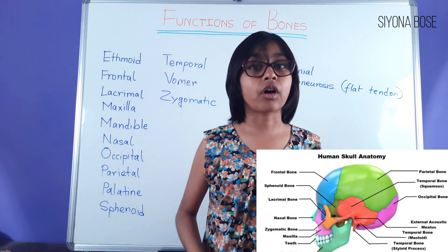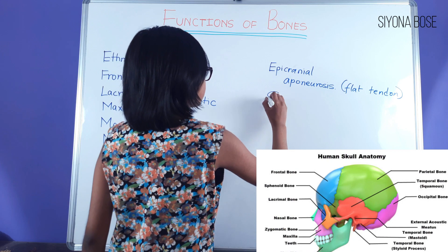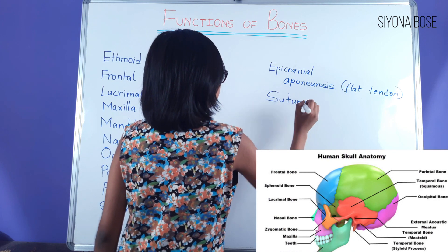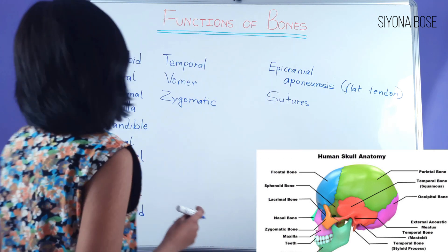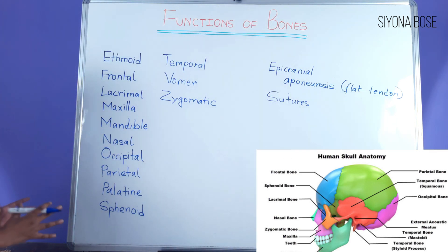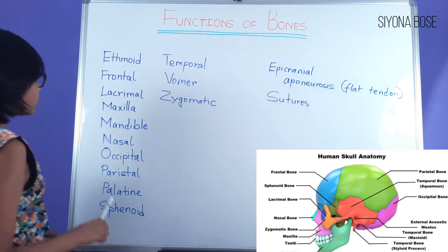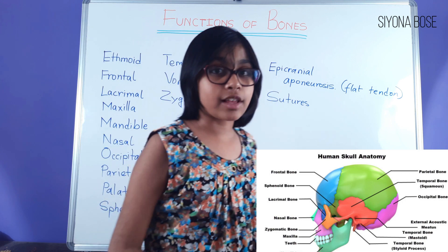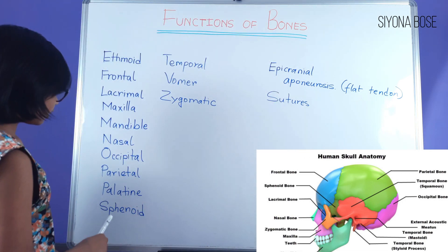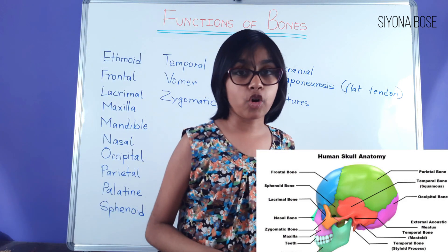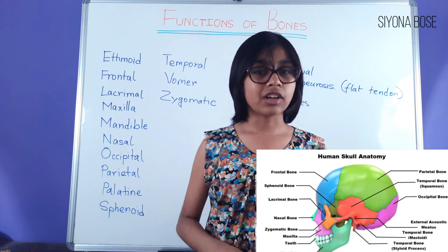The bones of the cranium are attached by sutures. Revising the bones of the face and cranium — the whole skull: ethmoid, frontal, lacrimal, maxilla, mandible, nasal, occipital, parietal, palatine, sphenoid, temporal, vomer, and lastly zygomatic.